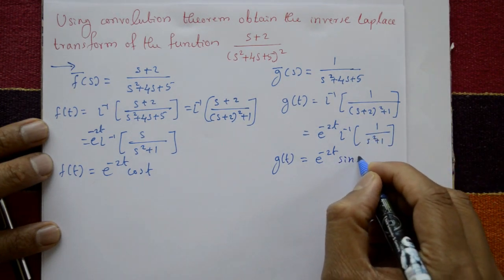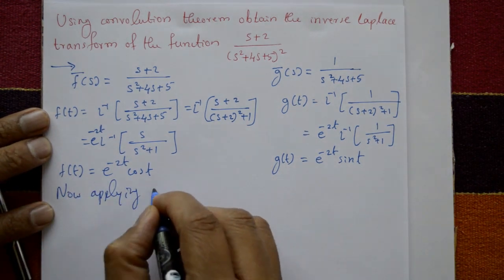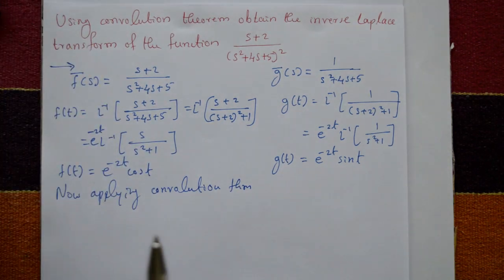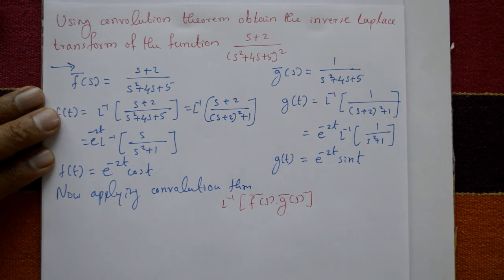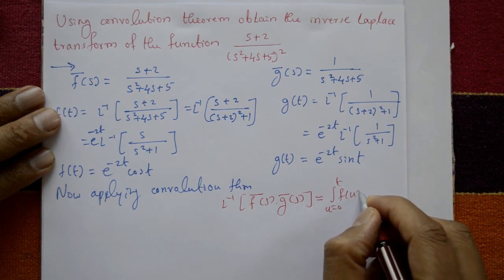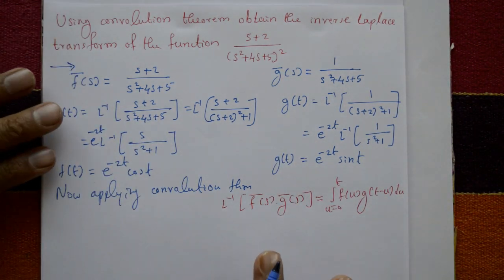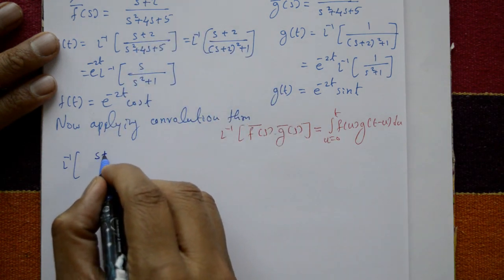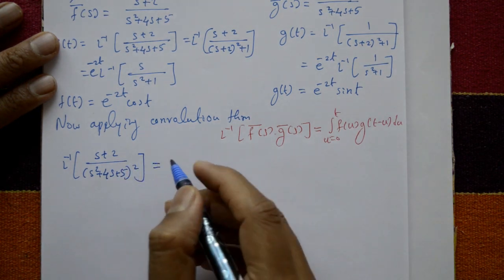Now applying the convolution theorem: the inverse of f̄(s) · ḡ(s) equals the integral from u = 0 to t of f(u) · g(t − u) du. So the inverse of (s + 2) / (s² + 4s + 5)² equals this integral.